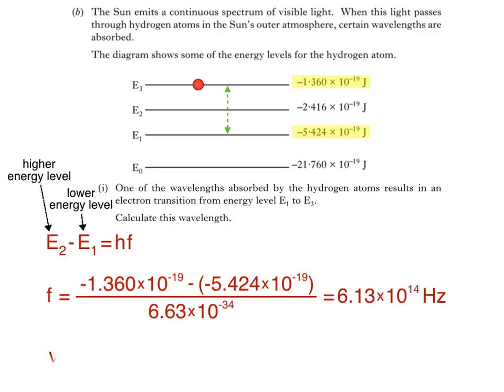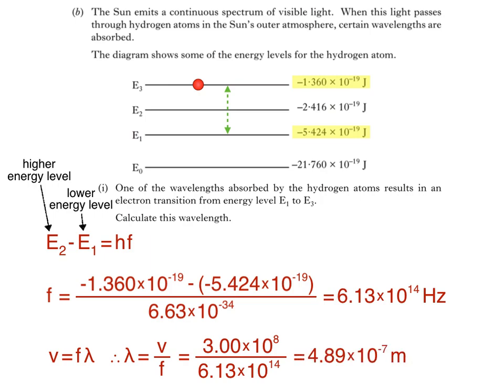Finally, we use this equation, V equals F lambda, the wave equation, in order to find the wavelength. We can rearrange the equation to give wavelength lambda equals V divided by F, where V is the speed of light, 3 times 10 to the power of 8 meters per second. So wavelength equals 3 times 10 to the 8 divided by 6.13 times 10 to the 14, which is 4.89 times 10 to the negative 7 meters.